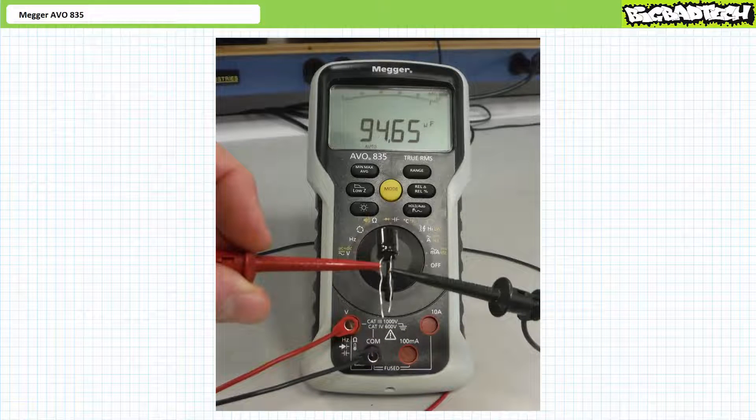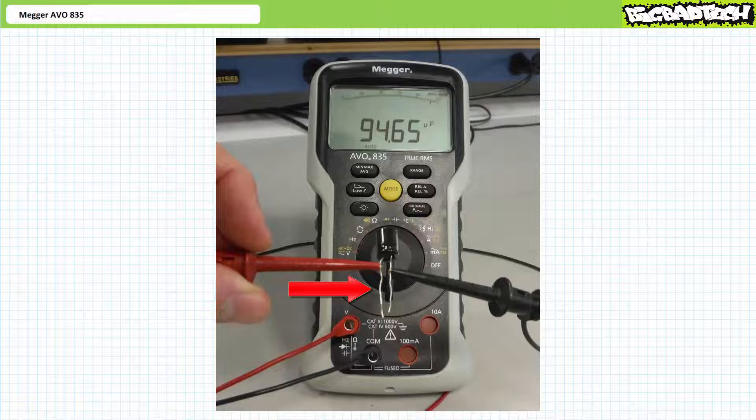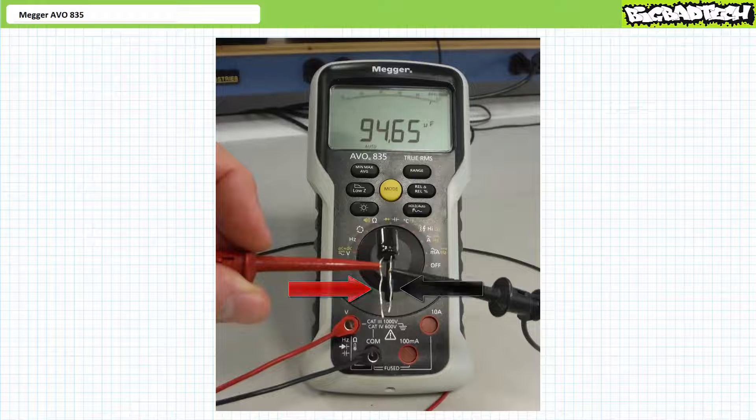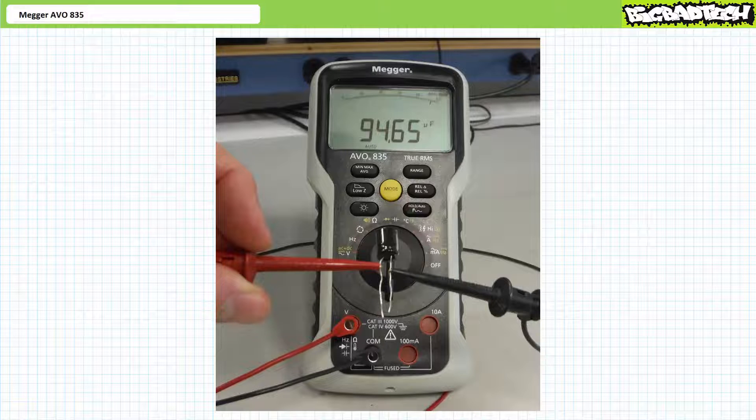It's important to respect the polarity of electrolytic capacitors when measuring capacitance by connecting the red live lead to the positive terminal and the black common lead to the negative terminal. When measured by the AV0835, this nominal 100 microfarad capacitor actually appears to have a value of roughly 94.6 microfarads.